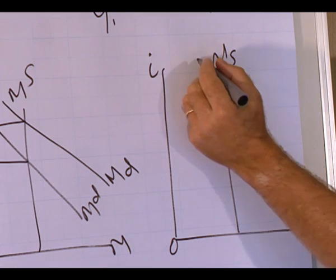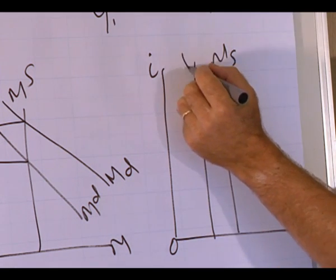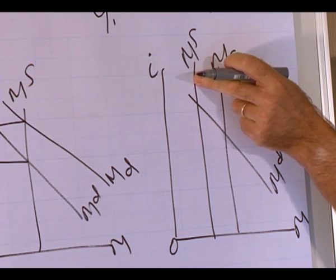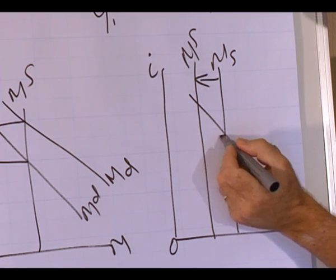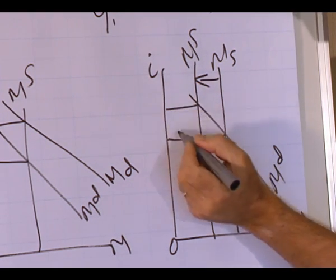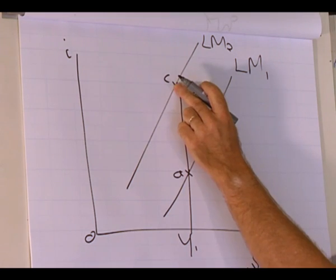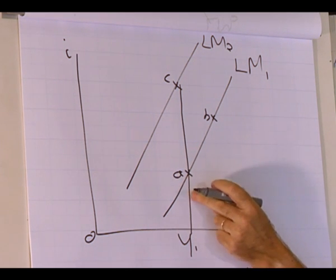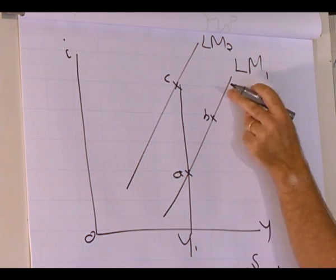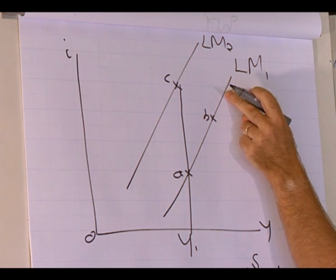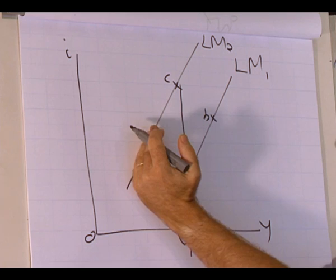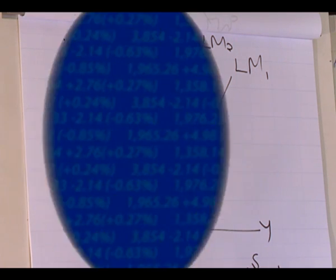The only thing that could have caused the increase in the interest rate is if the supply of money decreased. Therefore the interest rate increased from this level to this level, so the interest rate at point C is higher than point A. A change in the level of production caused a movement along the alum curve. A change in the supply of money caused a shift of the alum curve.